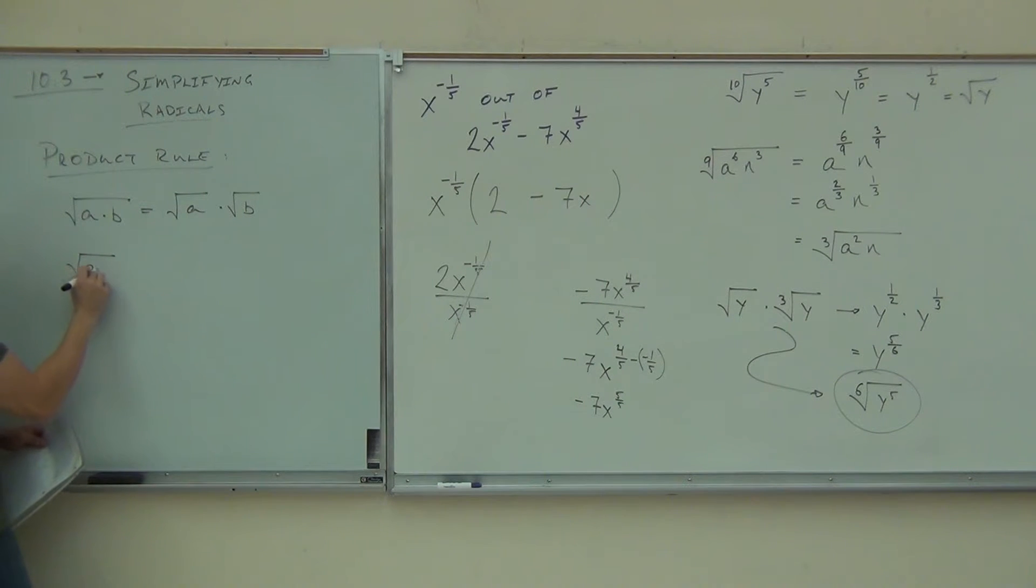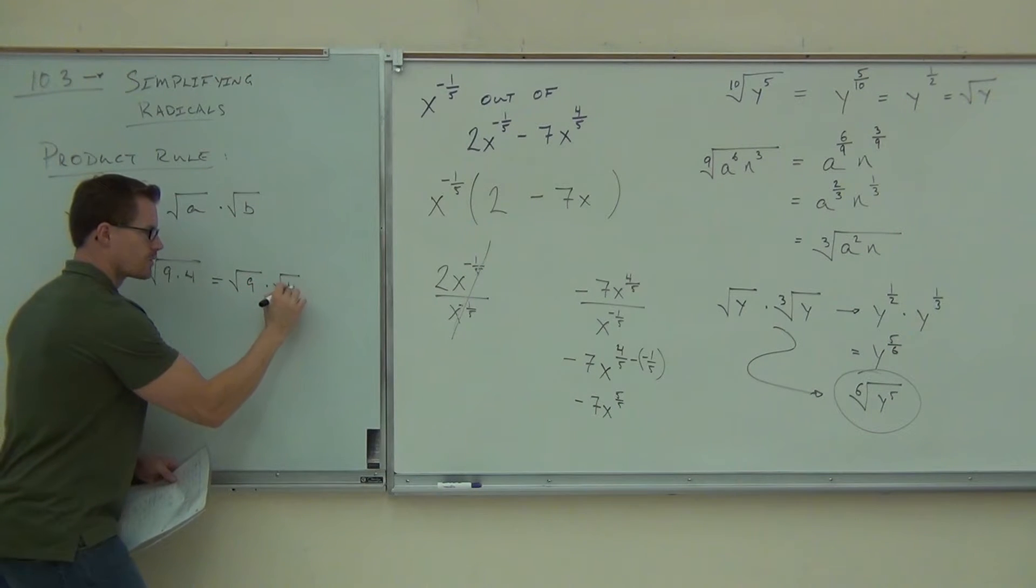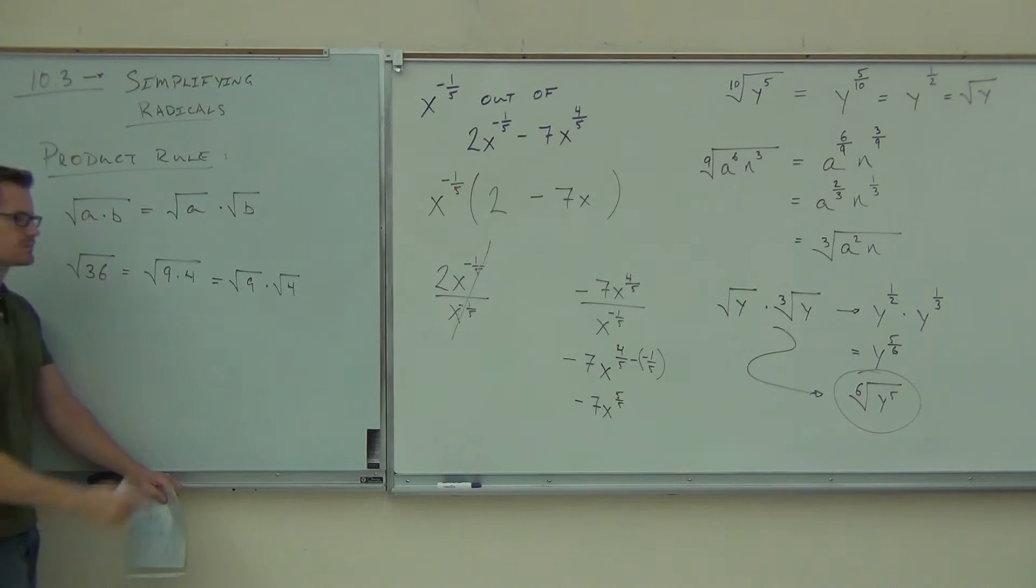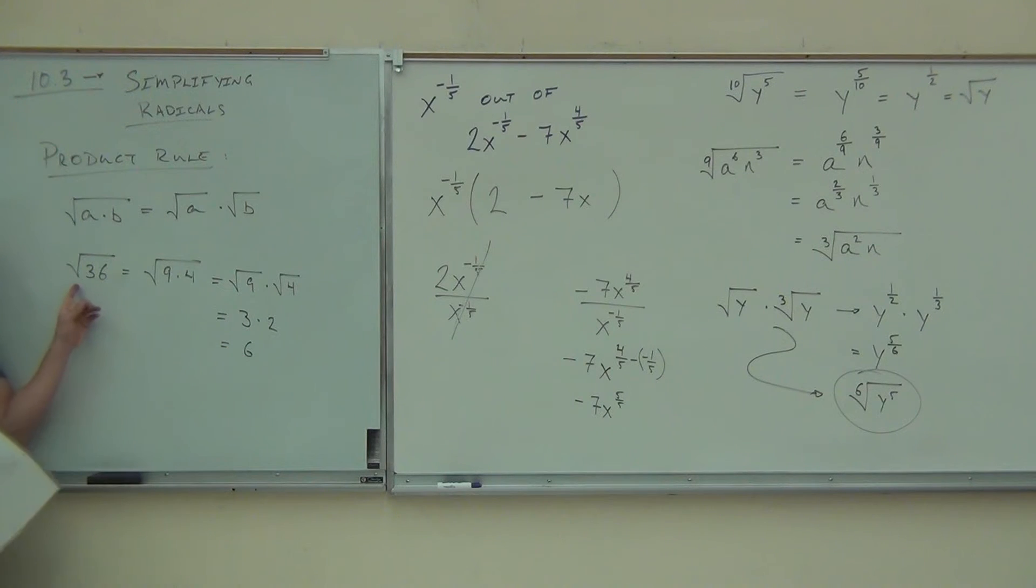If I have the square root of 36, I know the square root of 36 is, well, that's 9 times 4, right? According to this product rule, I should be able to separate the square root of 9 times the square root of 4. How much is the square root of 9? 3. How much is the square root of 4? 2. And that is equal to 6. How much is the square root of 36? 6. It does work.